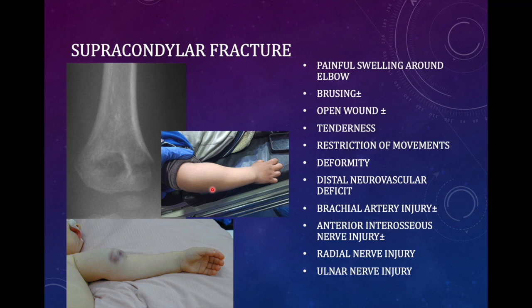By distal neurovascular deficit, we highlight that there can be associated brachial artery injury. The most commonly injured nerve is the anterior interosseous nerve, a branch of the median nerve. The fracture distracts the median nerve, which then pulls the anterior interosseous nerve, which is tethered to the interosseous membrane — that is the site where failure can occur. Median nerve, radial nerve, and other nerves can also be injured, but the most common is the anterior interosseous nerve.